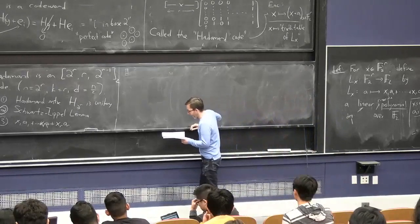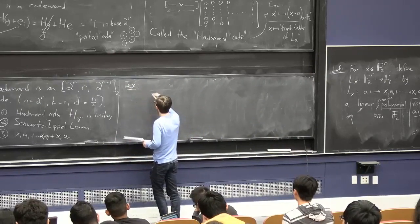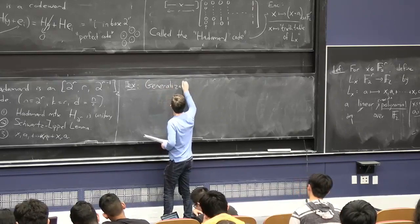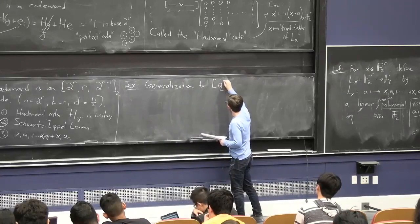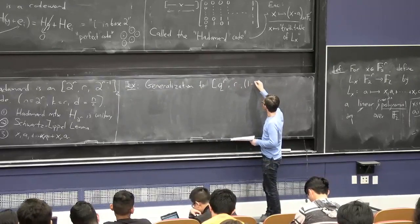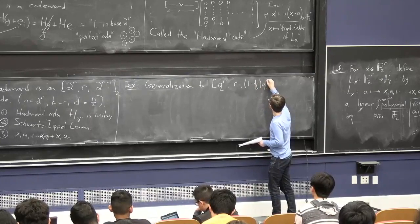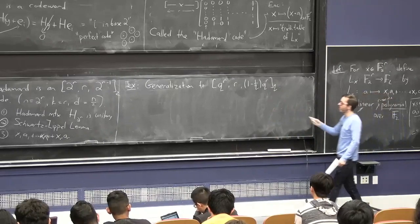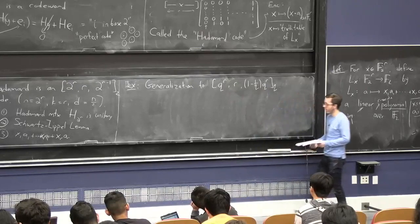In fact, there's a generalization of this hadamard code, which you can think about as an exercise, to larger field sizes. And it gives you a code where n is q to the r, k is still r, and the minimum distance is even better. It's 1 minus 1 over q times n. The rate is still terrible because you're mapping a string of length r to a string that's exponentially longer, but the rate approaches 1 as q gets bigger.